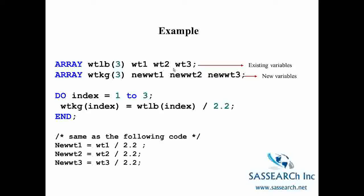We are then going to define a similar array called weight kilogram, or WTKG, that will contain three new variables that have yet to be defined. And these variables will contain the corresponding weight values in kilograms.